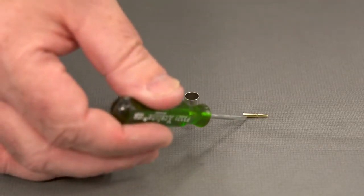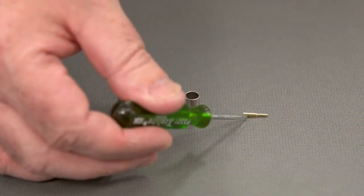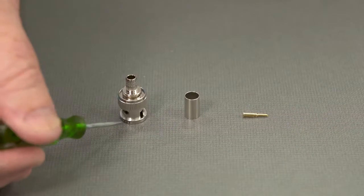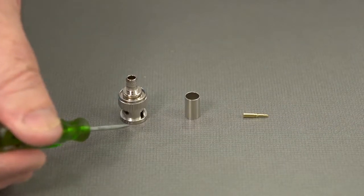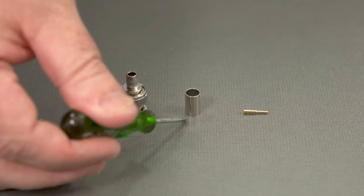There's a center pin which will go over the center conductor of the coax cable. There's the main body of the BNC connector, and then there's the ferrule, which will crimp on and that will hold everything together.